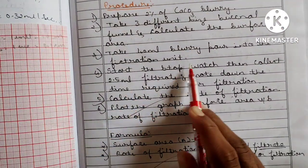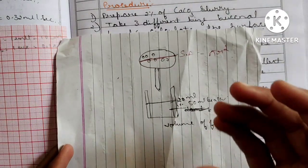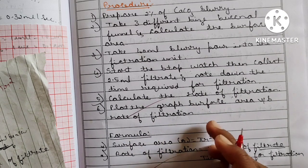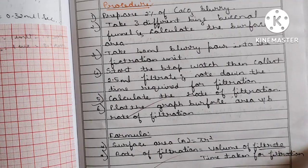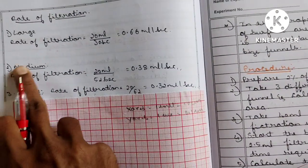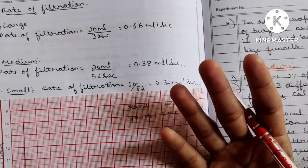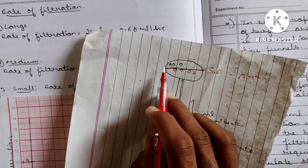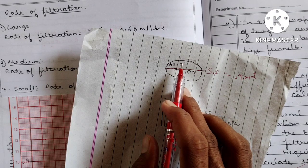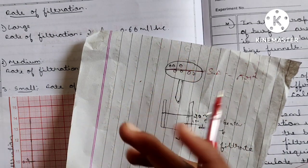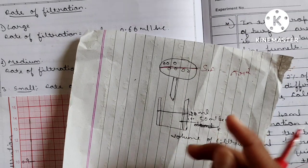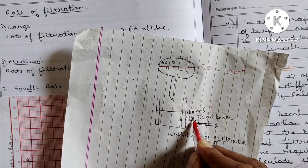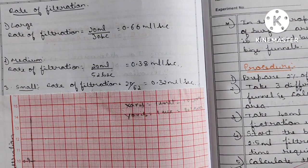Take 40 ml of the slurry and pour it into the filtration unit with a filter paper placed in the Buchner funnel. Start the stopwatch immediately after pouring. Collect only 20 ml of filtrate in your beaker below. When the beaker fills to 20 ml, stop the stopwatch and note down the time required.